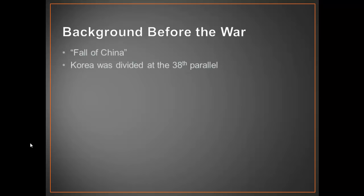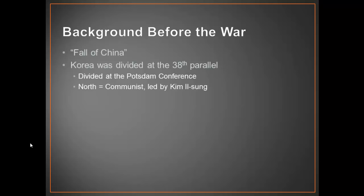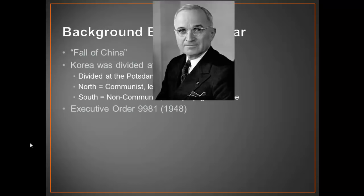Korea was divided at the 38th parallel into two nations — North Korea and South Korea. North Korea was communist and South Korea was not. This division was established at the Potsdam Conference in 1945. The Soviet Union was in control of North Korea, which was communist and led by Kim Il-sung, while the South was non-communist and led by Syngman Rhee.